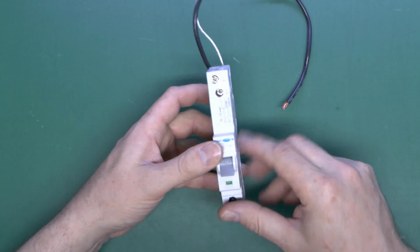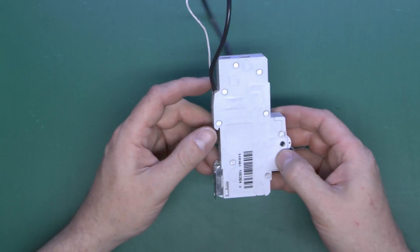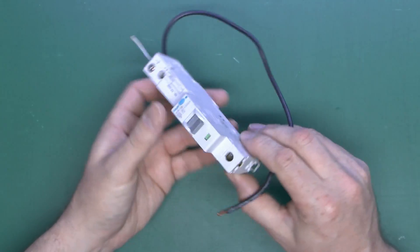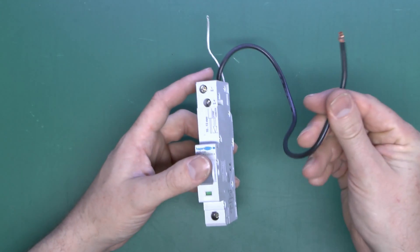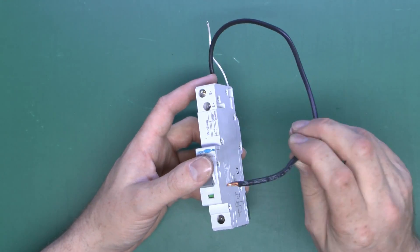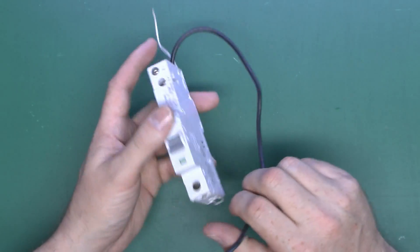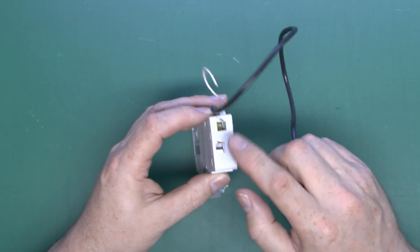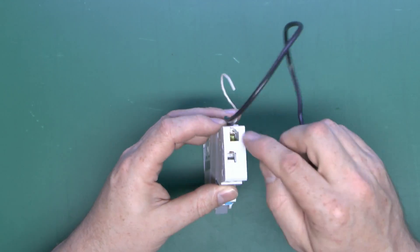Now here we have an RCBO, which is the circuit breaker and RCD combined into a single unit. And in common with most of the single pole versions of these, the neutral connection is on this separate lead, so line goes in at the bottom, and then the neutral is on this black lead in this case. Circuit wiring on the line and neutral connects at the top.